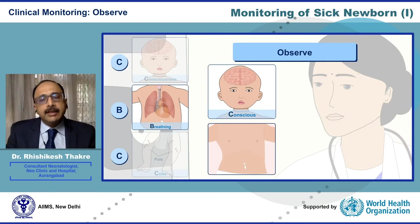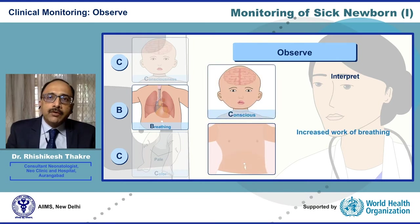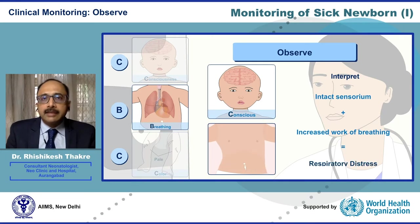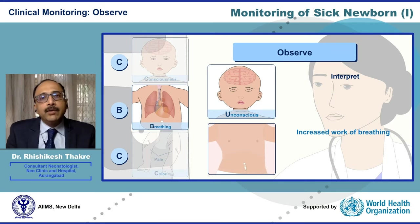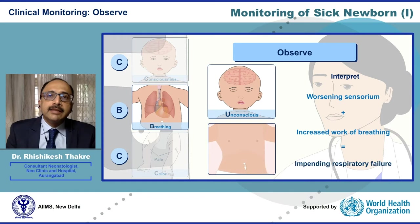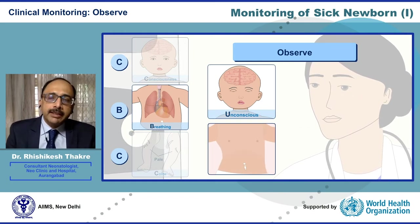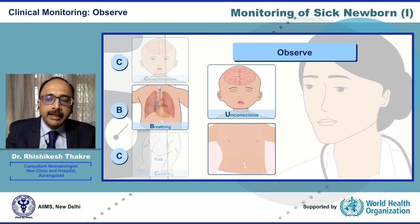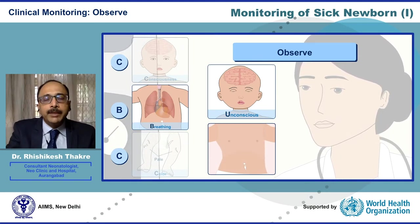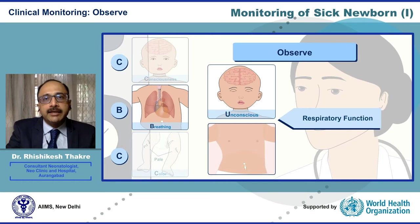We must always interpret the respiratory status taking into consideration the sensorium. Increased work of breathing with normal sensorium tells us that there is respiratory distress. Increased work of breathing with abnormal or worsening sensorium tells us that there is impending respiratory failure. So just on observing the breathing, a lot of information can be gathered about the well-being of the respiratory function.